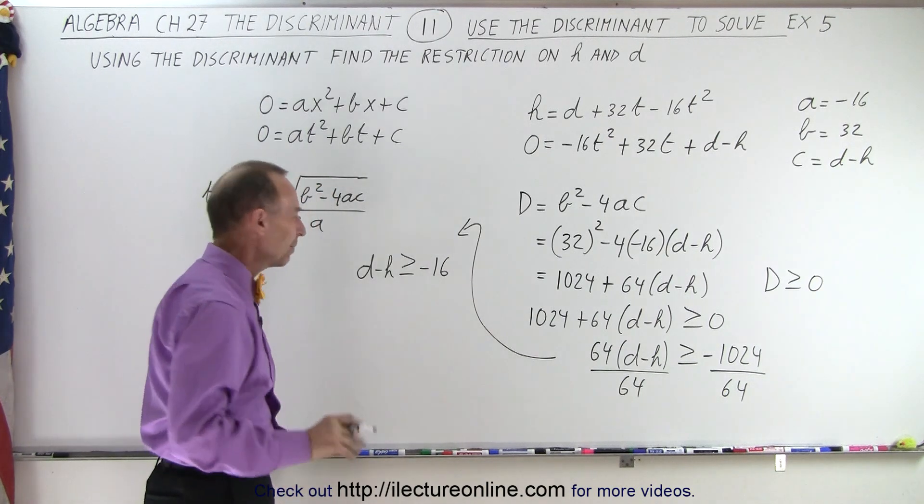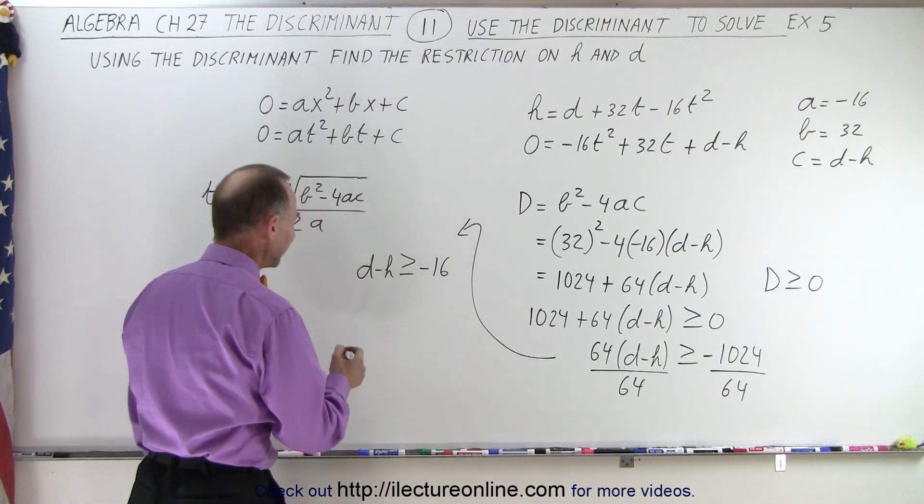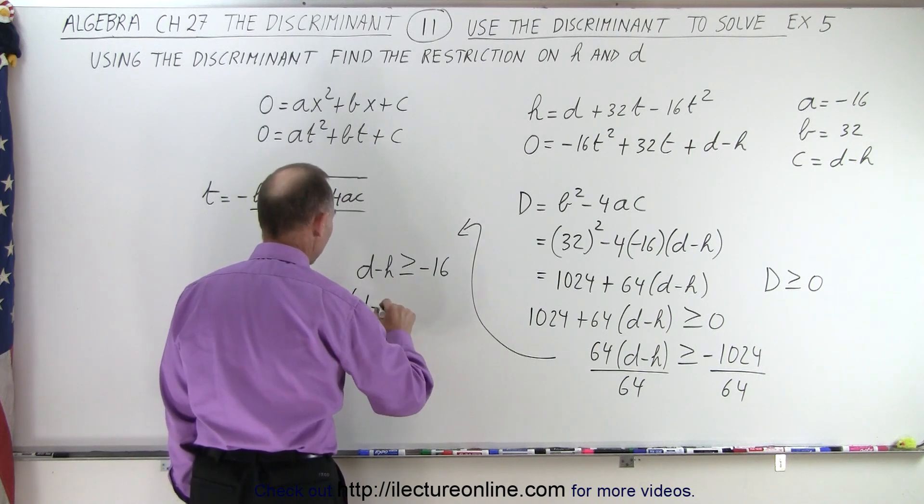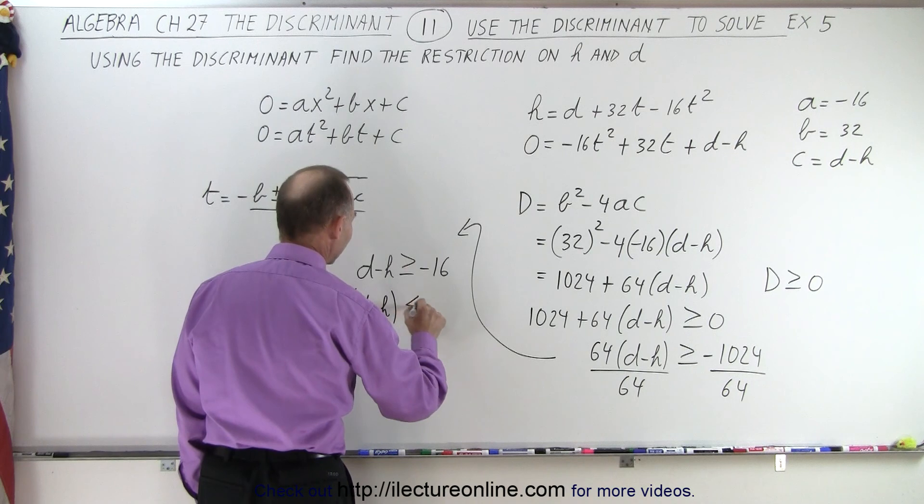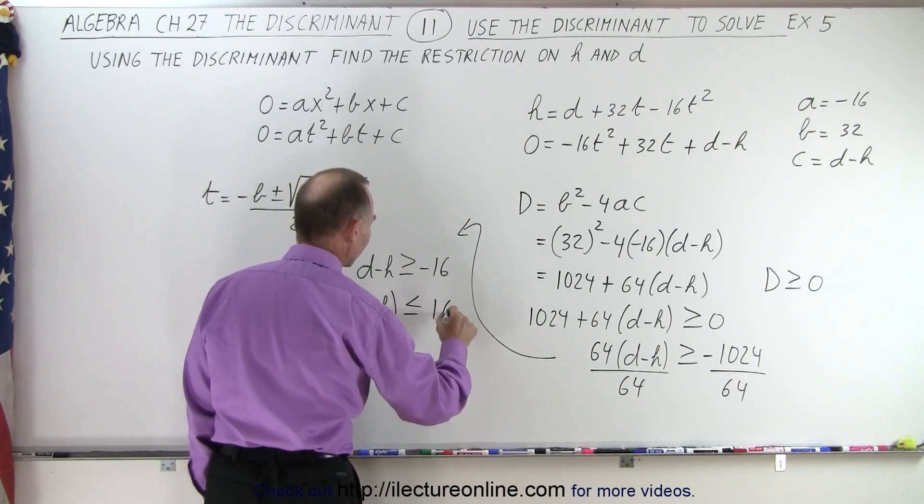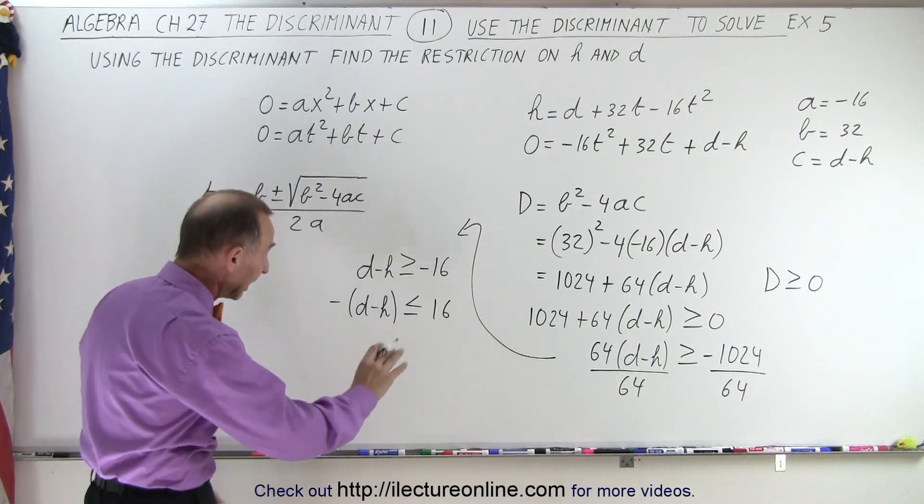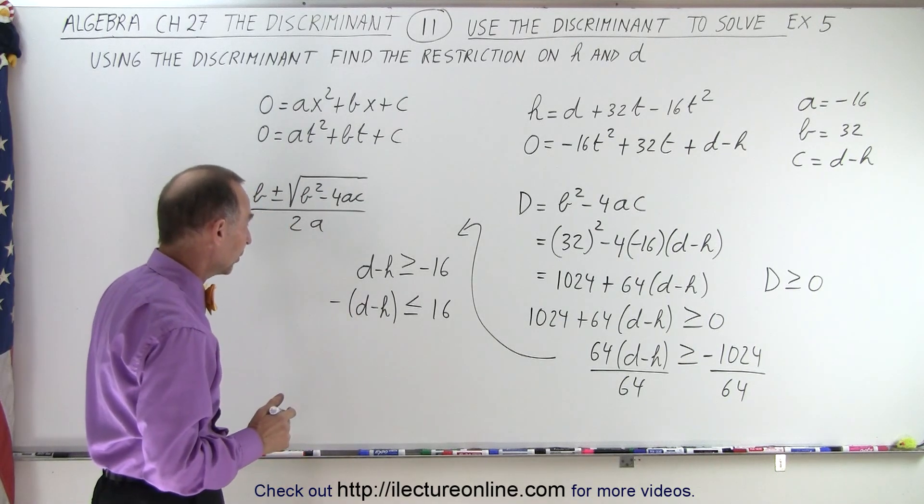I like this to be a positive number. I think that makes more sense. I'm going to multiply both sides by negative 1. So I can say that negative d minus h is less than or equal to positive 16. When I multiply both sides by a negative number, I have to turn the inequality symbol around.